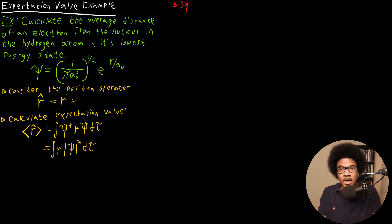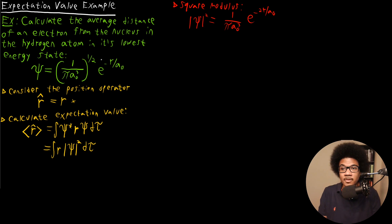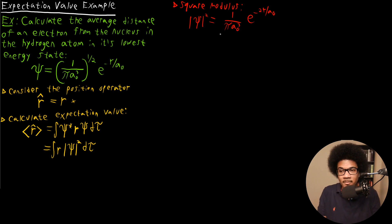Since we know this is just going to be the square modulus, we just have to square the wave function, multiply by R, and integrate over all space. So the square modulus of the wave function — Psi-squared — will equal 1 over Pi times A-naught cubed, times e to the negative 2R over A-naught. Since it's not a complex number, you just multiply the two together to get the square modulus.